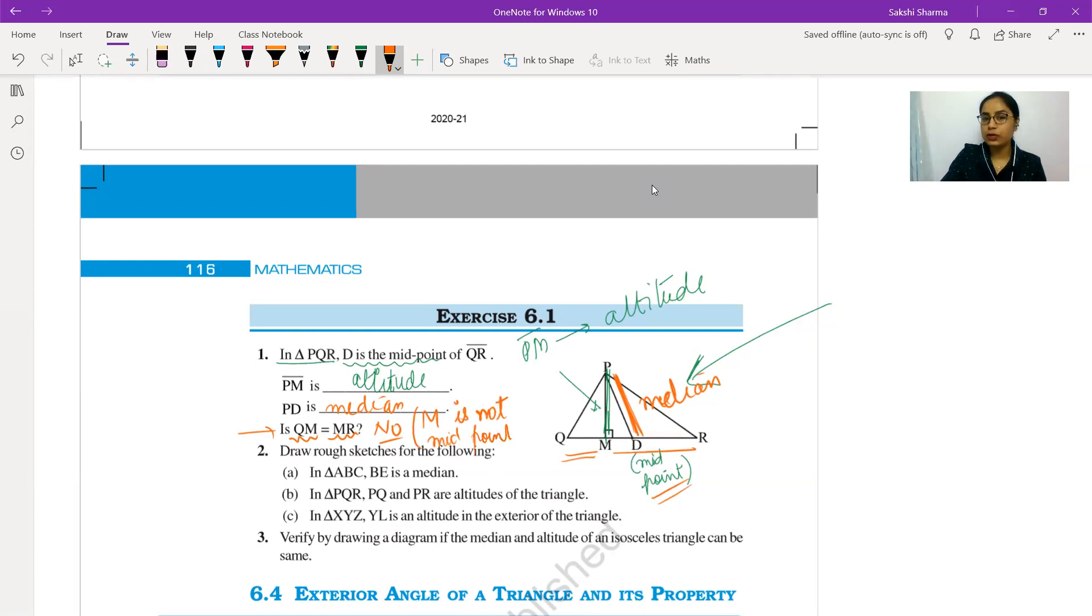Is the difference clear between altitude and median? Yes ma'am. Now some triangles are such where median and altitude are the same - those triangles are symmetrical. If your triangle is symmetrical where lines of symmetry can be drawn, then the median and altitude become the same. In an equilateral triangle, there can be three lines of symmetry, so all three medians and all three altitudes will be the same.